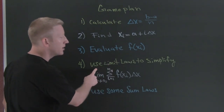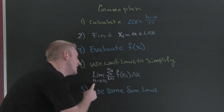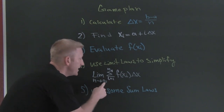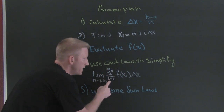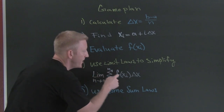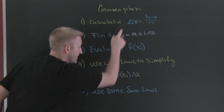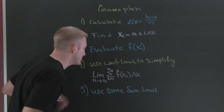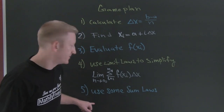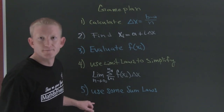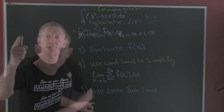Then we're going to be using our limit laws to simplify. We want to run the limit as n goes to infinity of the summation i equals 1 to n of what we found here times what we found here. After that, we're going to use some sum laws — the i's — and finish it.